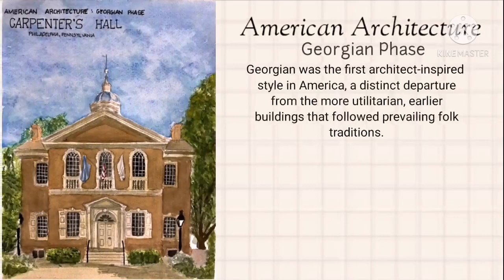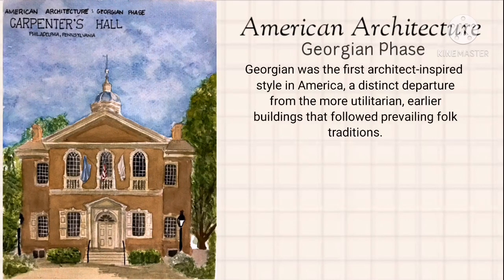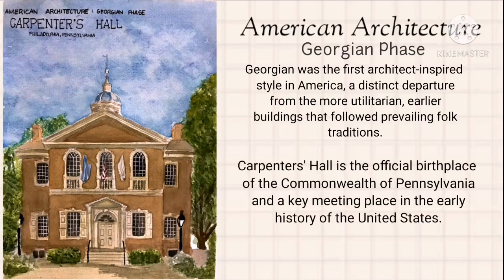American architecture — Georgian style was the first architect-inspired style in America, a distinct departure from the more authoritarian earlier buildings that followed prevailing folk tradition. Carpenters Hall in Philadelphia, Pennsylvania was the official meeting place of the Commonwealth of Pennsylvania and a key meeting place in the early history of the United States.